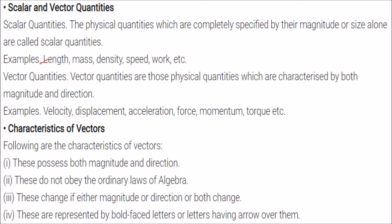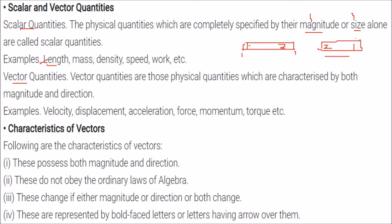Scalar and vector quantities. Scalar quantities are those physical quantities which are completely specified by their magnitude, size, or value. For example, length — if you measure a scale, the length is from one point to another. If you change the orientation, the length remains the same. So direction does not play any role for scalar quantities.